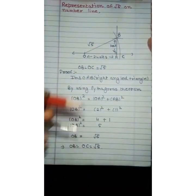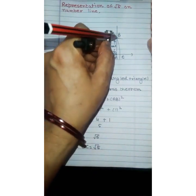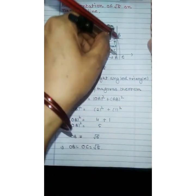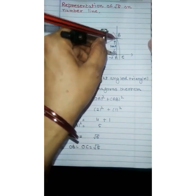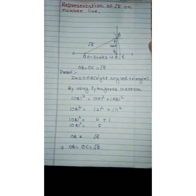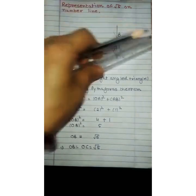With A as center draw an arc of 1 unit which intersects the line at B. Now join OB.